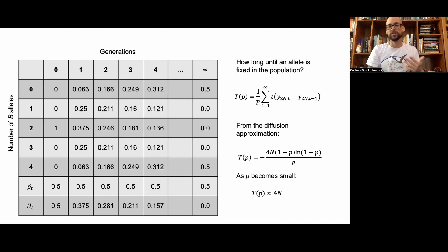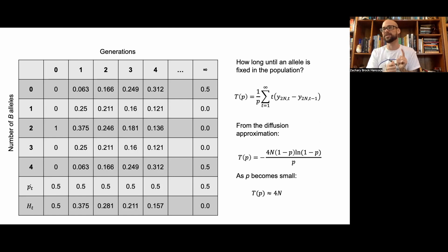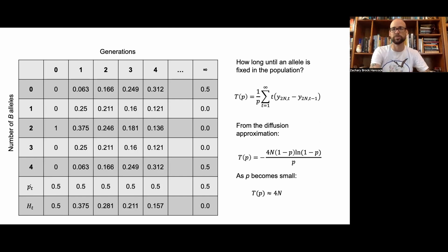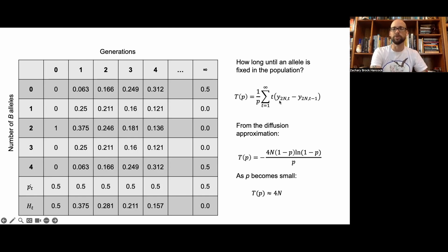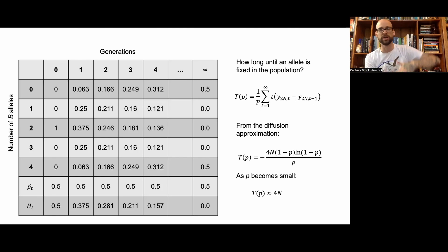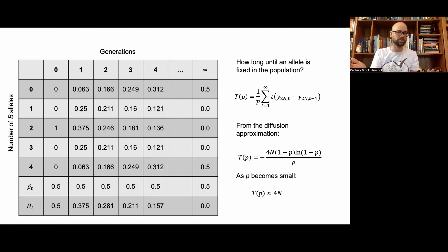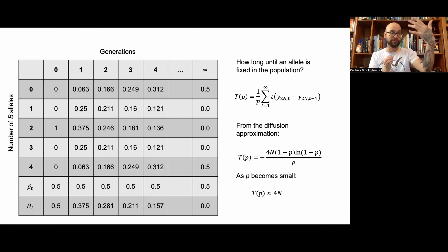We can also ask how long we should expect to wait until an allele becomes fixed. There are two approaches. The first is an exact but cumbersome matrix algebra formula: T(fixation|P) = (1/P) × Σ(t=1 to ∞) t × [Y_{2N,t} − Y_{2N,t−1}]. This requires calculating the entire matrix. People don't generally use this approach, so instead we rely on the diffusion approximation — a method actually borrowed from physics describing gas molecules diffusing in a vacuum, first applied to population genetics by Kimura.